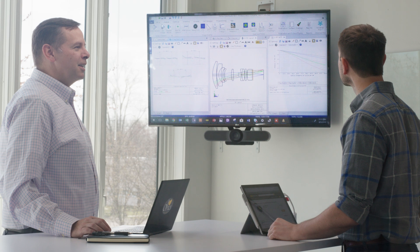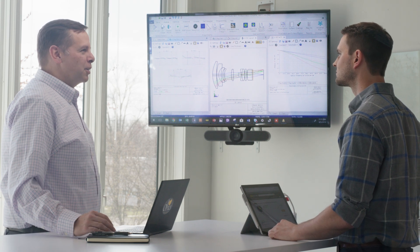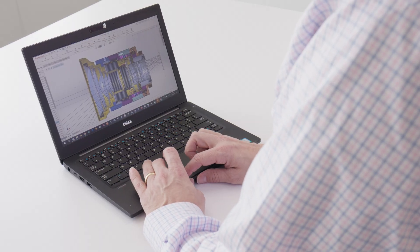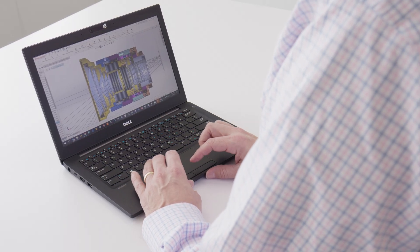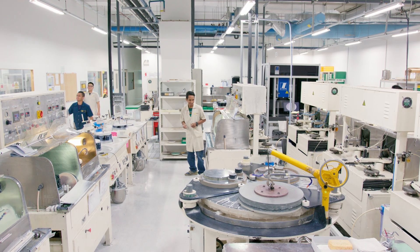Before a lens can be made, the performance specifications and project requirements must be determined. Once the optical and optomechanical design of the lens is complete, the manufacturing process begins.